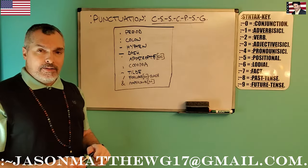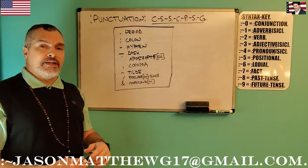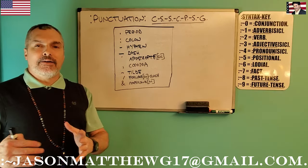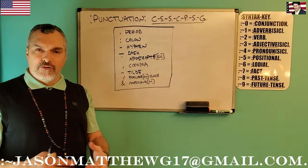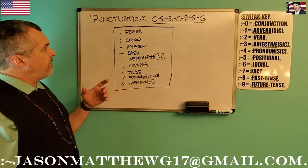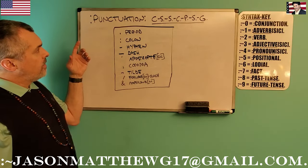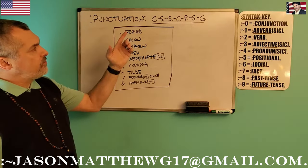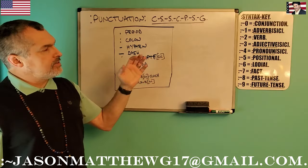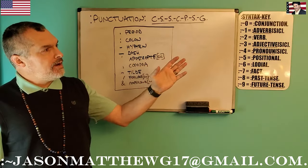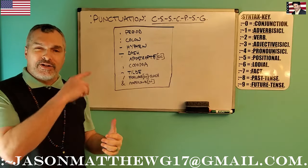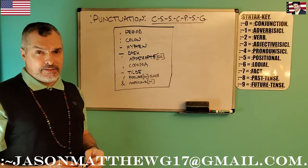Then we have a comma, which in correct sentence structure shows sets of facts, or groups of facts. So you could put: for the punctuation, comma, space, symbols, comma, space, hieroglyphics of the correct sentence structure. You see the comma groups together sevens.